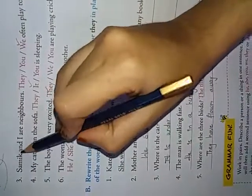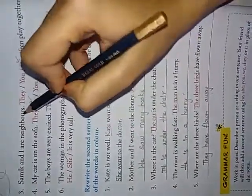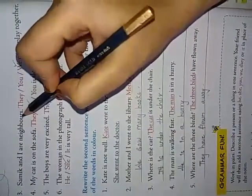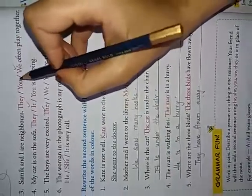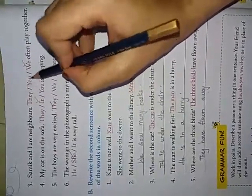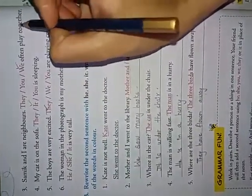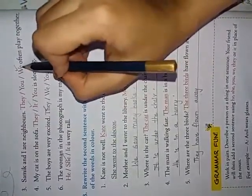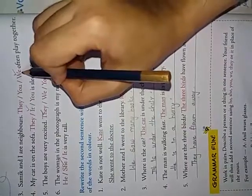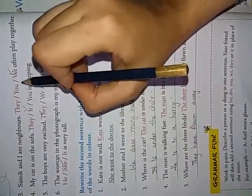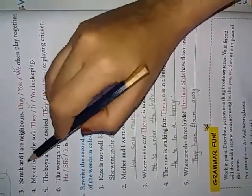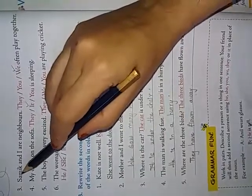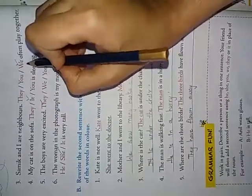Next one. Samik and I are neighbors. Two persons. Then, you, they, you or we. Often play together. Whenever two persons comes, you have to use we. You cannot say you often play together. We often. Two persons. It is about two persons. Samik and I. So, we have to use we.